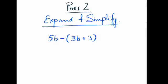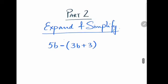Part 2: expand and simplify. In this one it's 5b minus and then brackets, so we are multiplying with the minus sign. It becomes 5b minus 3b, and minus plus is minus 3.